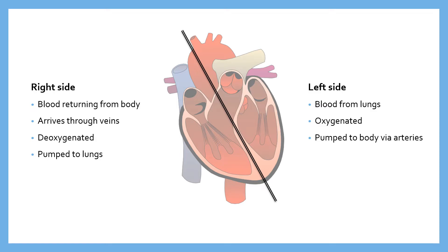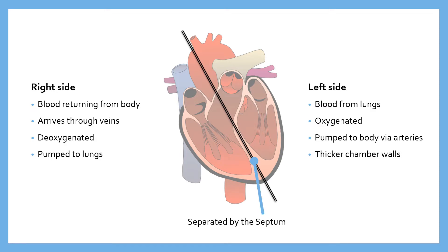The chamber walls on the left side of the heart, particularly in the lower chamber, are a lot thicker than on the right. The whole heart is essentially divided into two roughly along a central line by a structure known as the septum. The septum simply separates the right side from the left side of the heart.